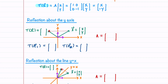Let's now find the standard matrix that reflects vectors about the y-axis. When we reflect our vector x about the y-axis, we get T of x equal to (-x, y). Our vector E1 transforms to (-1, 0) and E2 remains the same. T of E1 is equal to (-1, 0) and T of E2 is equal to (0, 1). Our standard matrix is then [[-1, 0], [0, 1]].